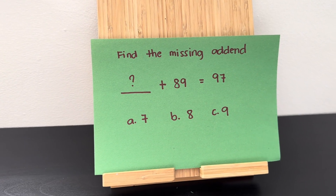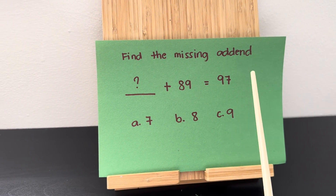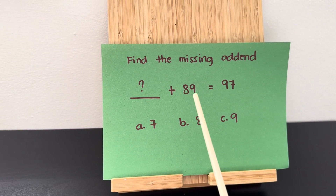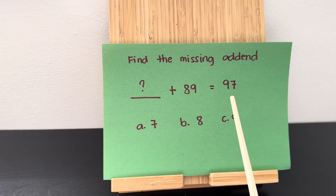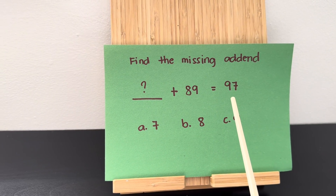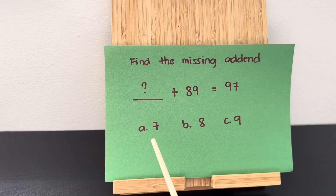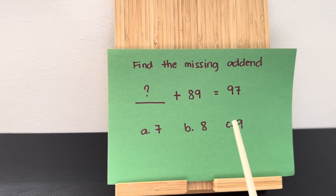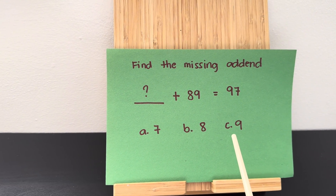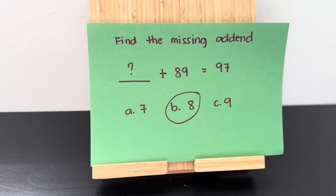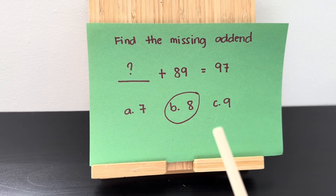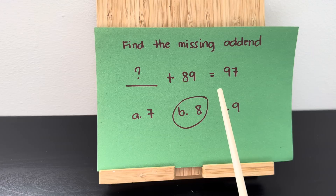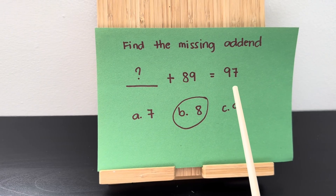Next, let's find the missing addend. Blank plus 89 is equals to 97. Is it letter A, 7? Is it letter B, 8? Or is it letter C, 9? And the correct answer is letter B, 8. 8 plus 89 is equals to 97.